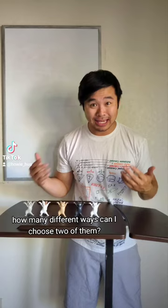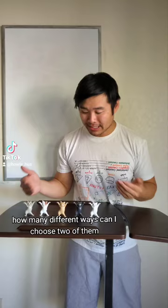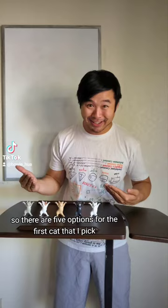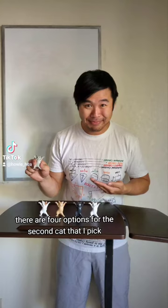So with five cats, how many different ways can I choose two of them where order doesn't matter? So there are five options for the first cat that I pick. Let's say I picked this one. Then afterward, there are four options for the second cat that I pick. Let's say I picked this one.